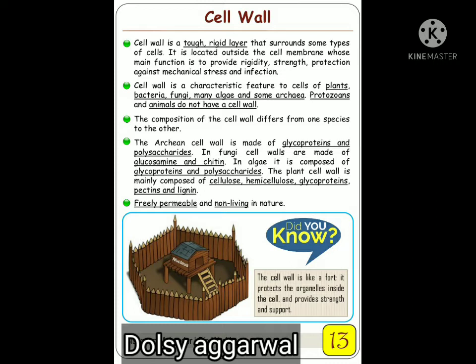The cell wall is located outside the cell membrane. Its main function is to provide rigidity, strength, protection, and resistance to mechanical stress. The cell wall is a characteristic feature of plants, bacteria, fungi, algae, and some archaebacteria. It is completely absent in protozoans and animals.